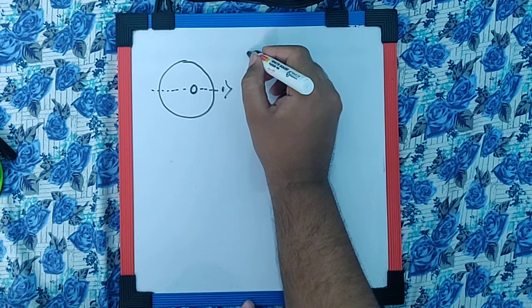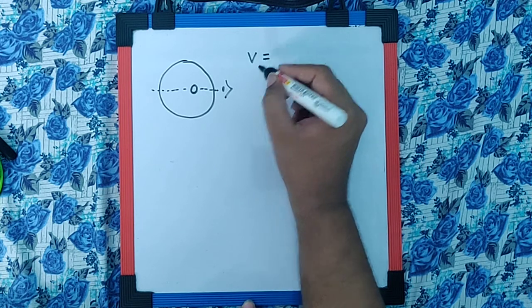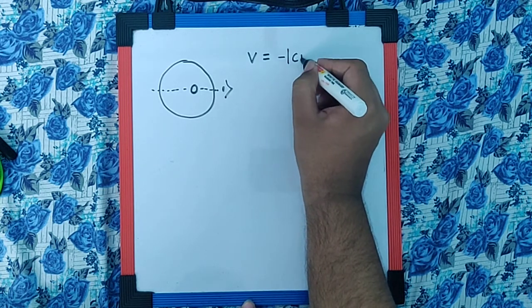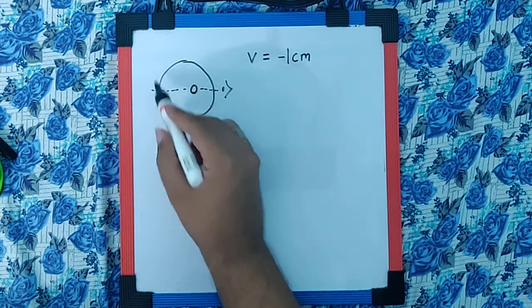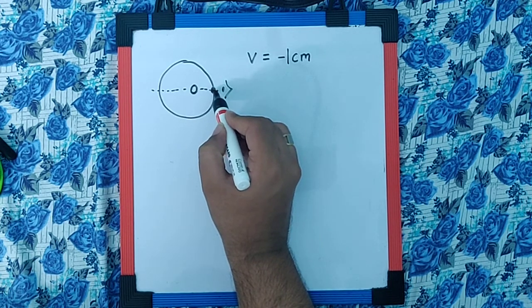So we can say the v or actually the distance of the image is at minus 1 cm because they say the image appears inside the glass sphere. So it is on the left hand side of this optical center.